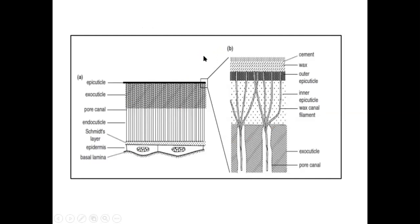The detailed structure of the cuticle shows the outermost epicuticle, the middle exocuticle, and the endocuticle as the most prominent part. Below the cuticle is a cement layer, then epidermis. Epidermal cells form the epidermis and the basement membrane known as the basal lamina. This part is further divided into different layers, including parts of the exocuticle and epicuticle.